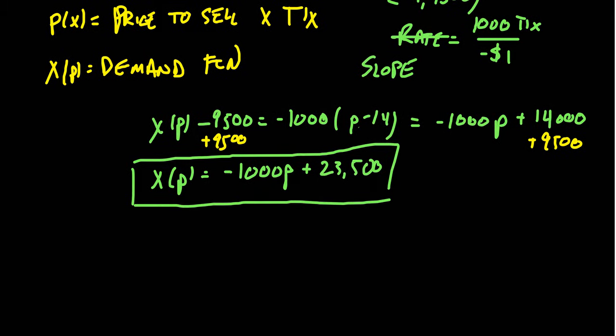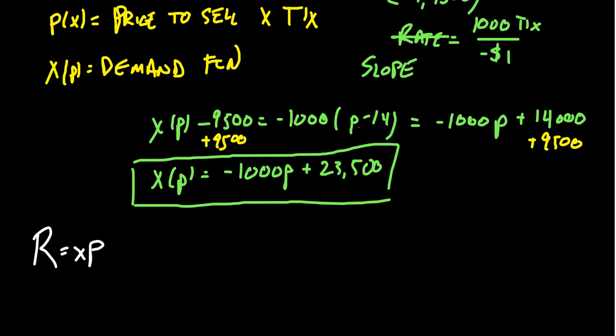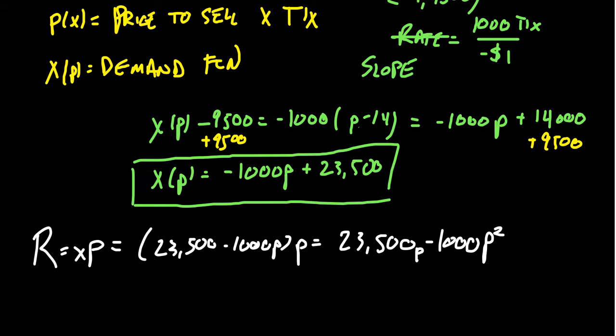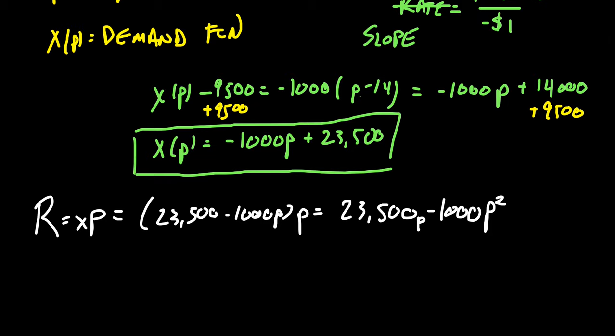Revenue, remember, revenue is going to be X times P. So if we take our demand function, which is 23,500 minus 1,000 P, and we times that by P and distribute, we see 23,500 minus 1,000 P squared. Oops, I forgot the P before. This is our P right there. So 23,500 P minus, maybe I'm going to fix that minus sign since it's a little bit easier to see, 23,500 P minus 1,000 P squared. This gives us the revenue. So we can pick our price and then we can go from there. So this would help us with the question about finding a model for revenue.